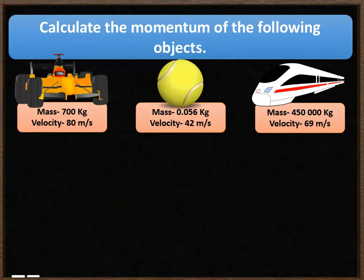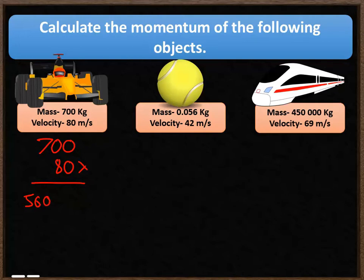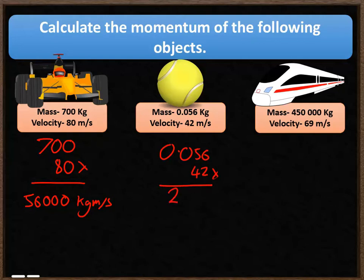Let's work through the first three. The car has a mass of 700 kilograms times 80 meters per second, giving 56,000 kilogram meters per second. The second object has a mass of 0.056 kilograms and a velocity of 42 meters per second, giving a momentum of 2.352 kilogram meters per second.